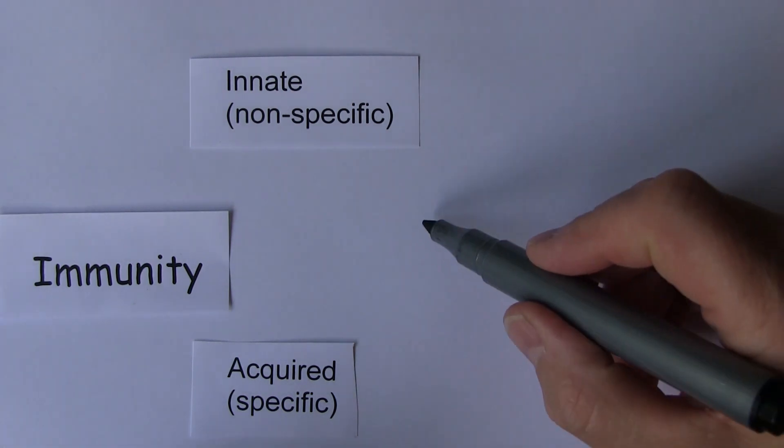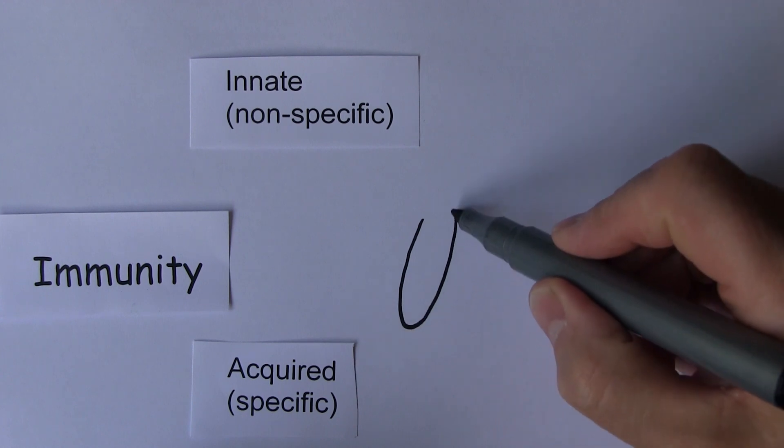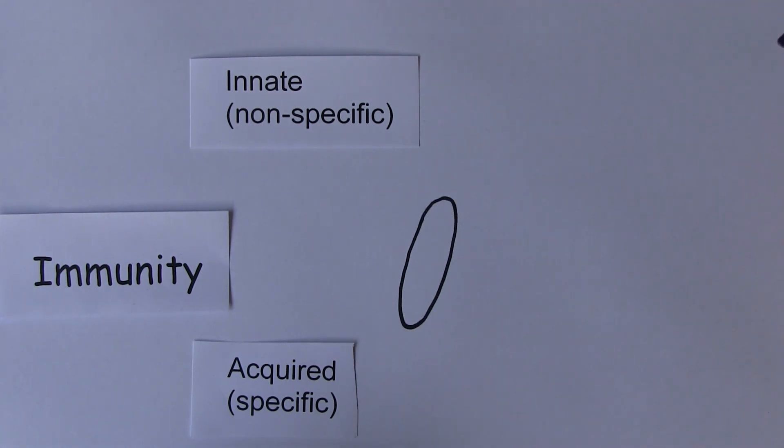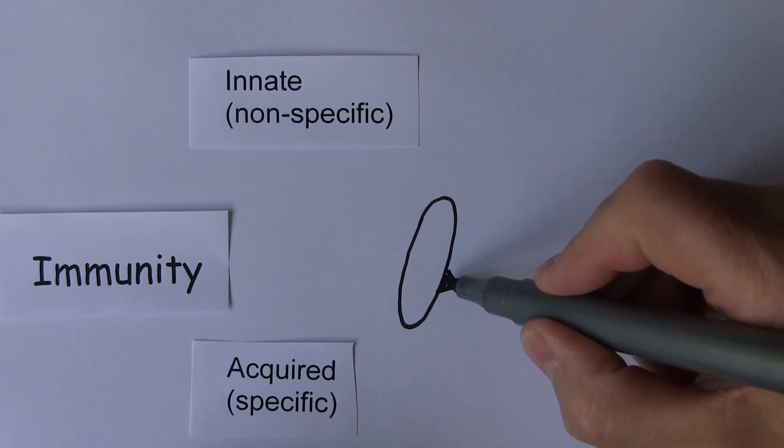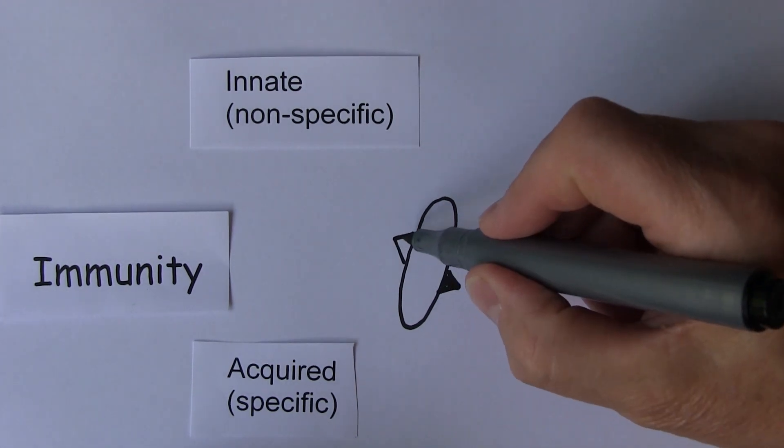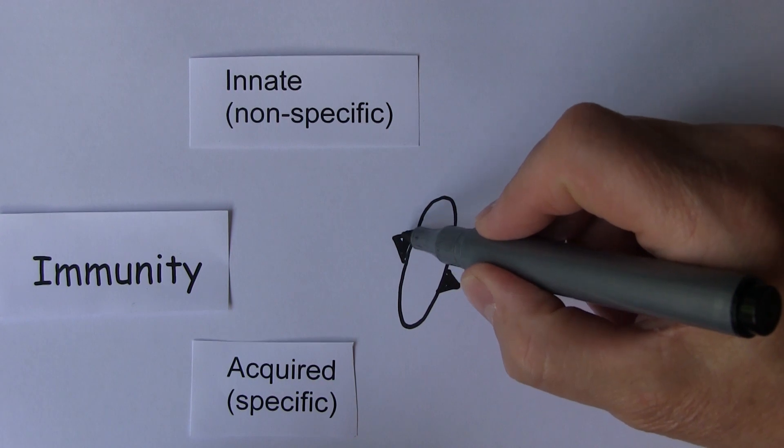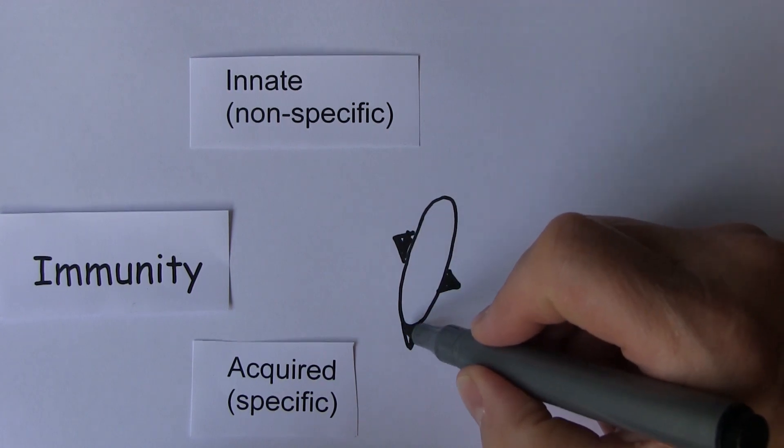So what happens is there's a bacterial cell, it could be a viral cell, there's a bacterial cell here. And on its surface that bacterial cell has got particular proteins. Let's imagine these are triangular shaped proteins for the sake of the diagram.